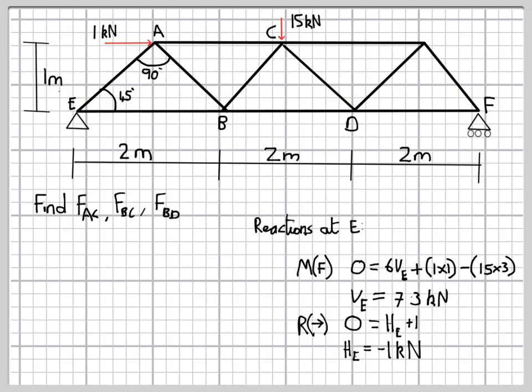So with the reaction forces in place, we can now apply the method of sections, and the approach is to imagine cutting the truss through the three members we want to find the forces in. So as indicated there in the diagram, we imagine cutting through those three members.